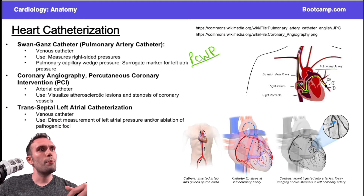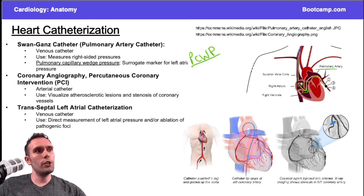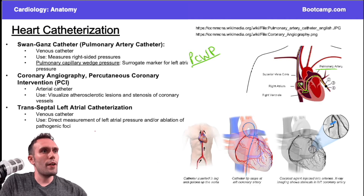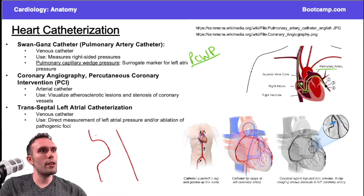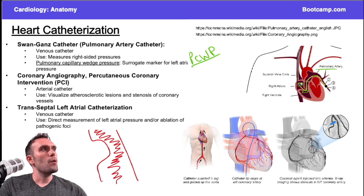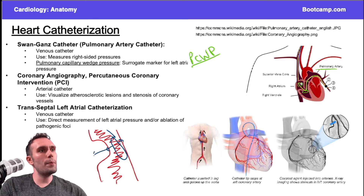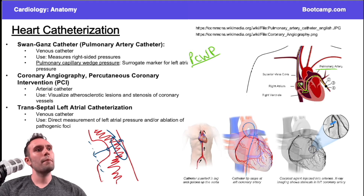Percutaneous coronary intervention, also known as PCI, is used when there's an occlusion in one of these vessels. If there's an area of stenosis visible with contrast, a catheter with a balloon can be inserted and the balloon inflated to open up the blood vessel. This pushes the atherosclerotic plaques to the side, and after dilating the vessel, the balloon is removed to restore better perfusion.